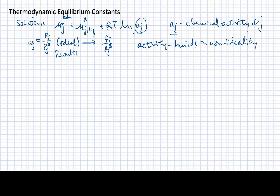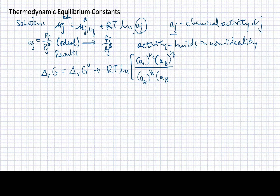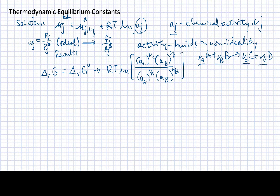What that means in particular is that some of these equations that we've been writing over and over again in this lesson look like this, where we've got a reference form of the Gibbs energy, and then we add to it RT times log of a reaction quotient. Now I'm going to write that reaction quotient in terms of these activities — it will be the activity of component C raised to its stoichiometric coefficient times the activity of component D raised to its stoichiometric coefficient, divided by the same quantities for the reactants A and B.